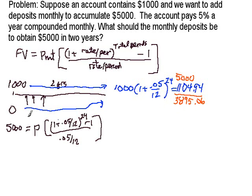So, we really just have to end up getting $3,895.06. So, we can replace the $5,000 with $3,895.06. So, we could actually calculate this value and then divide it into this to find out what our monthly payment is going to be.